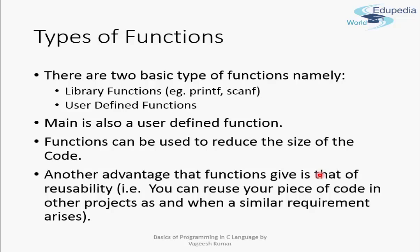There are two basic types of functions in C language: library functions and user-defined functions. Library functions are functions like printf and scanf; they are declared in the C libraries and come built-in with C, so you don't have to write them — you can straightaway call and use them.